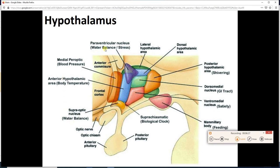Water balance, body temp, blood pressure, water balance, stress, shivering, GI tract control, satiety, feeding. Basically, the hypothalamus plays a big role in controlling many of your homeostatic functions. It is also going to make hormones, and the hormones from the hypothalamus actually are shuttled down to the back of the pituitary, to the posterior pituitary, where they're released.